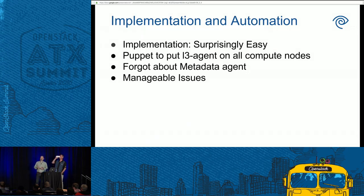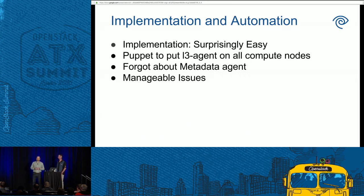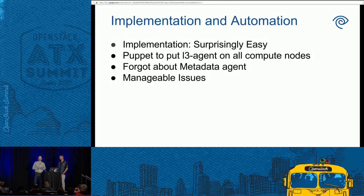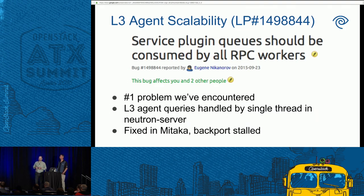When we started working on this presentation, we had a placeholder for implementation and automation, and this is about as far as it got — because, to be honest, the implementation is pretty straightforward. For us, this was mostly telling Puppet that our compute nodes should have L3 agents on them. We realized afterwards we also needed the metadata agent on those boxes, otherwise we couldn't boot any instances. But past that, the actual implementation is really pretty simple. We kind of thought it was going to be more involved.